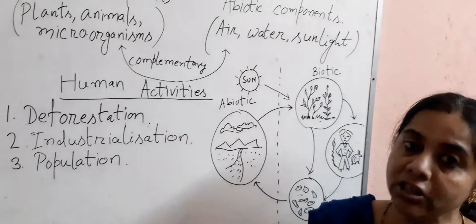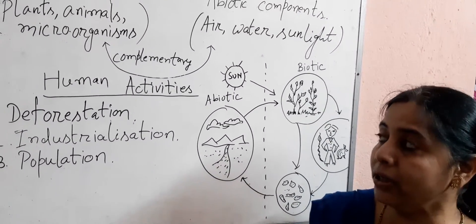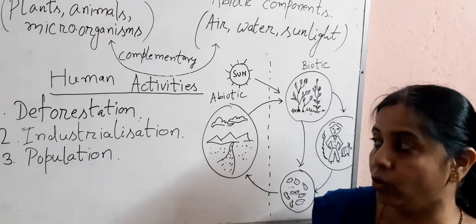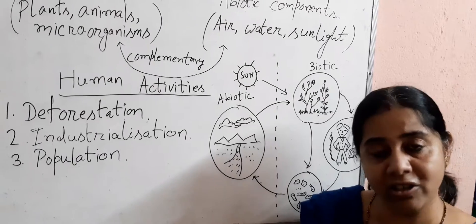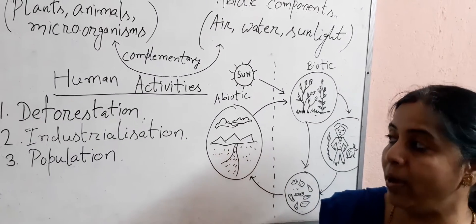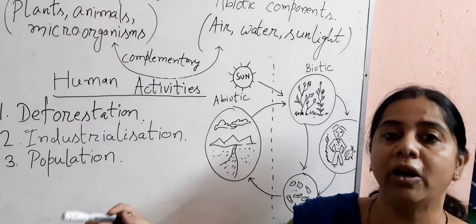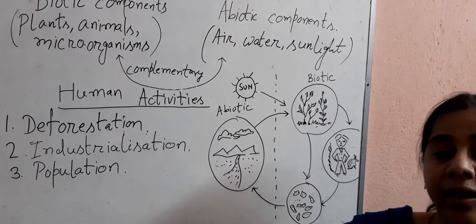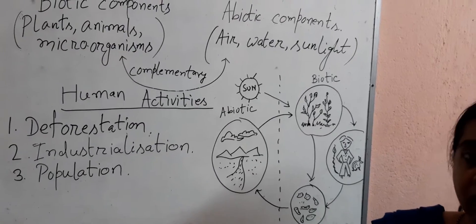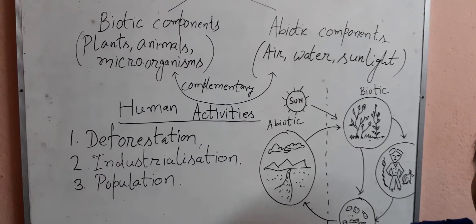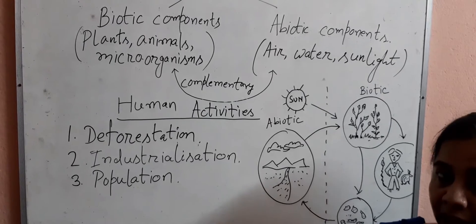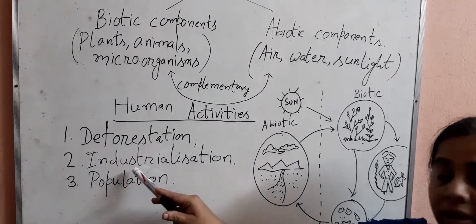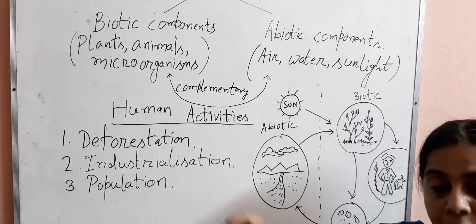In the name of development and industrialization, human beings do a lot of harm to this environment. Human beings cut large numbers of trees for building factories, houses and buildings, and grasslands are destroyed for agriculture. This is deforestation.